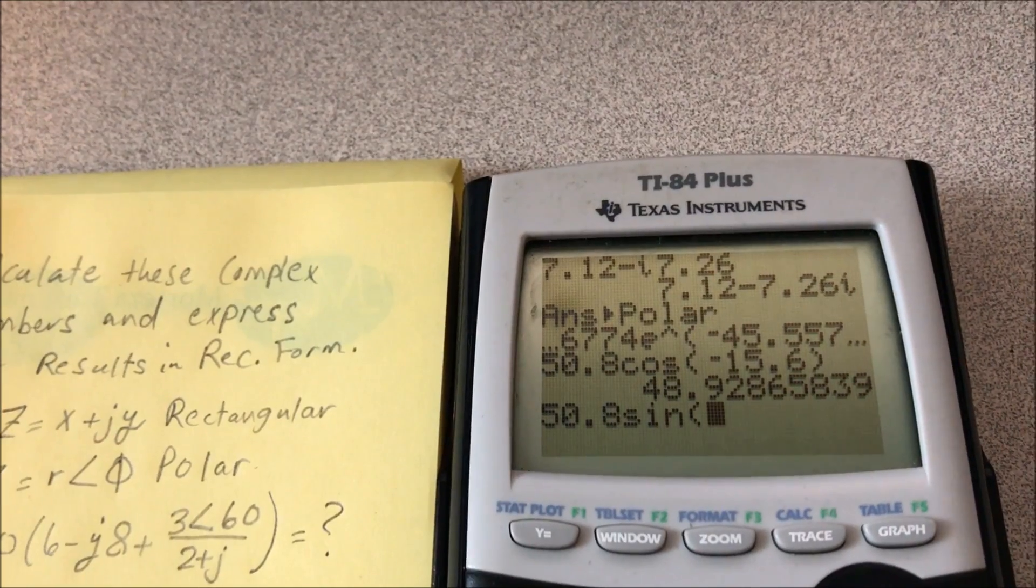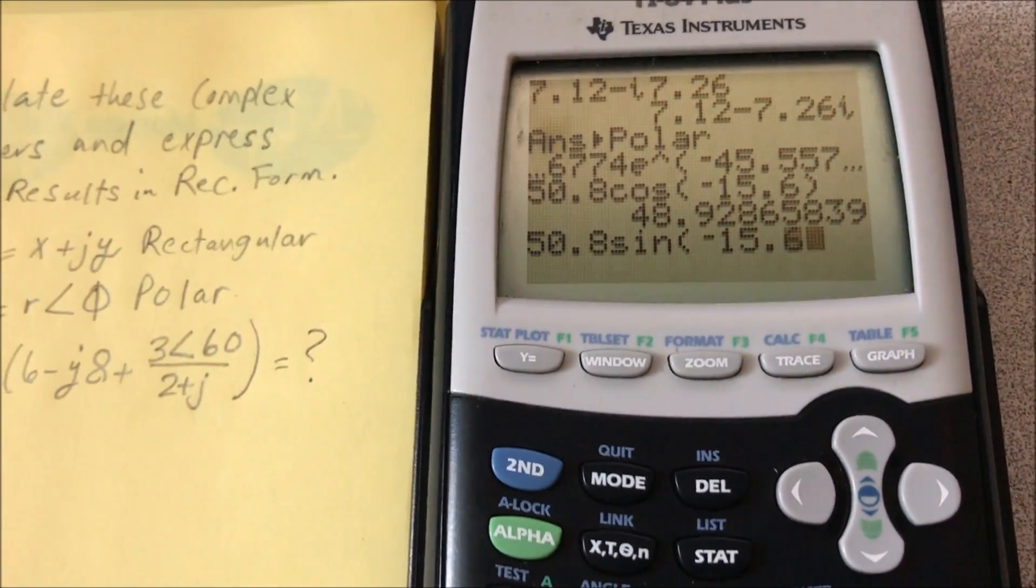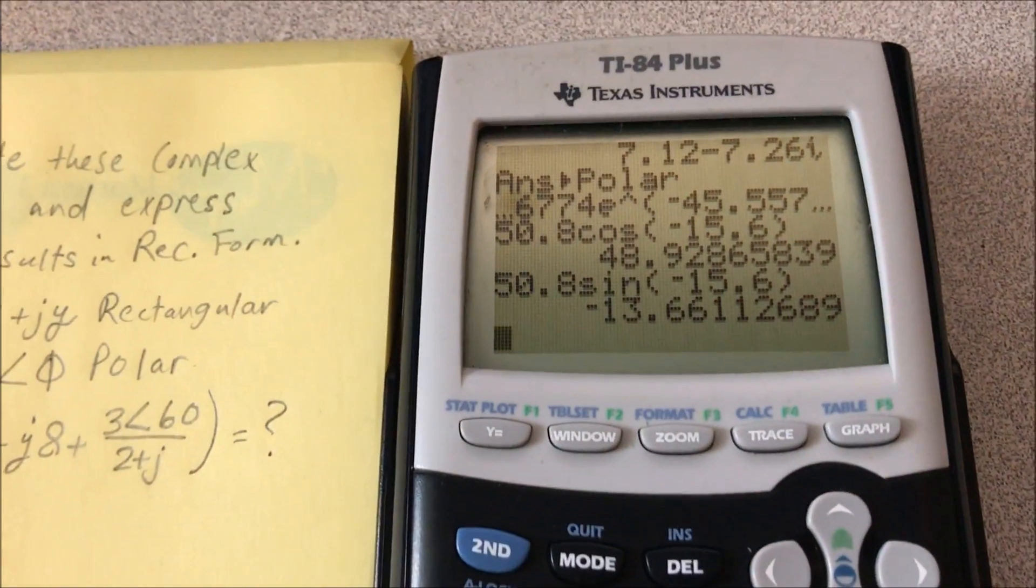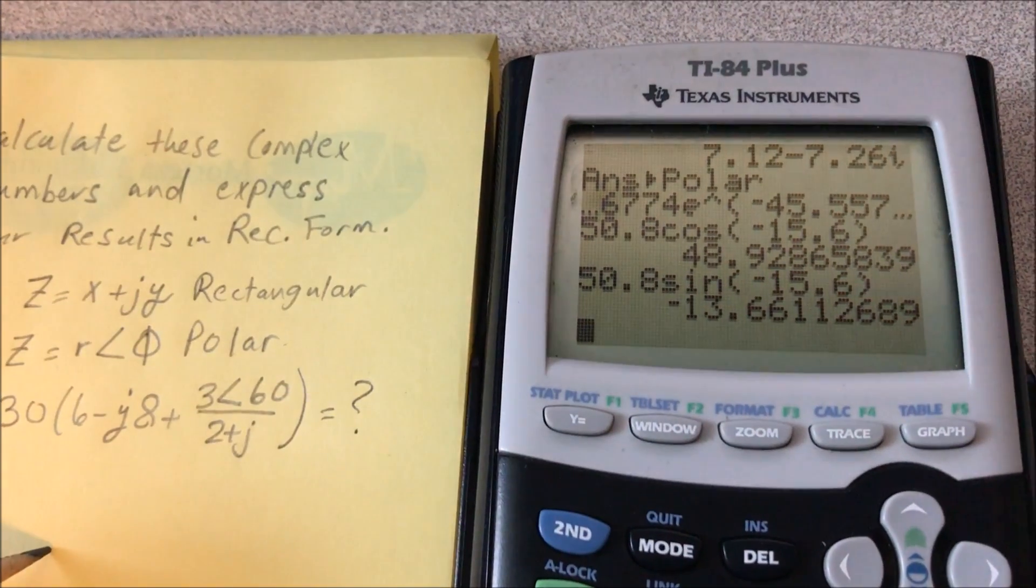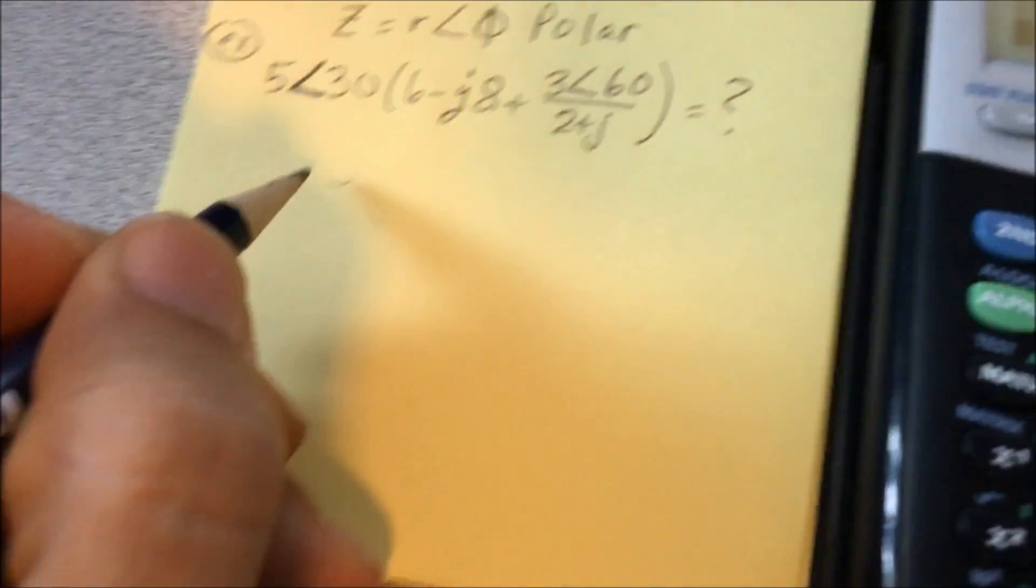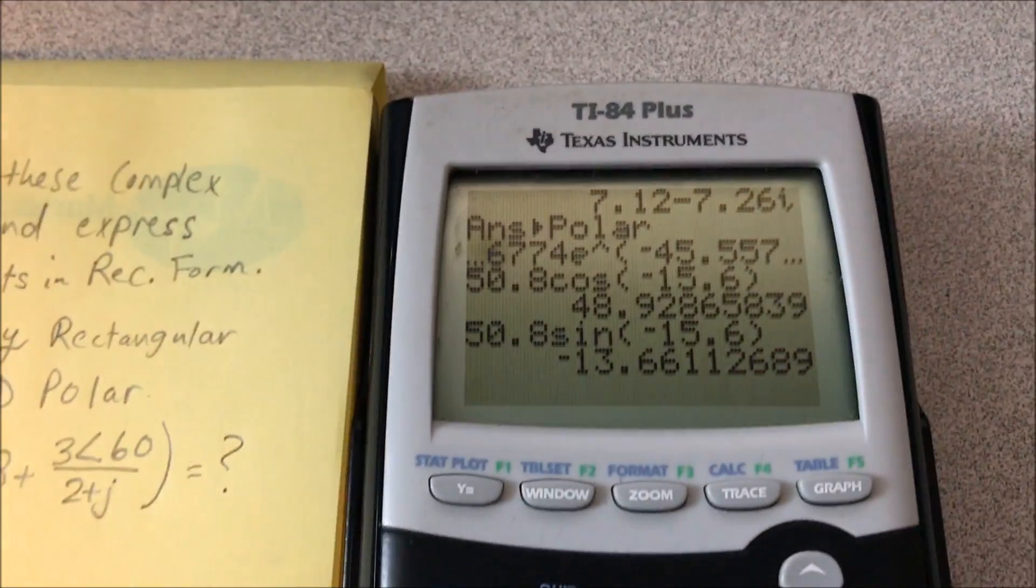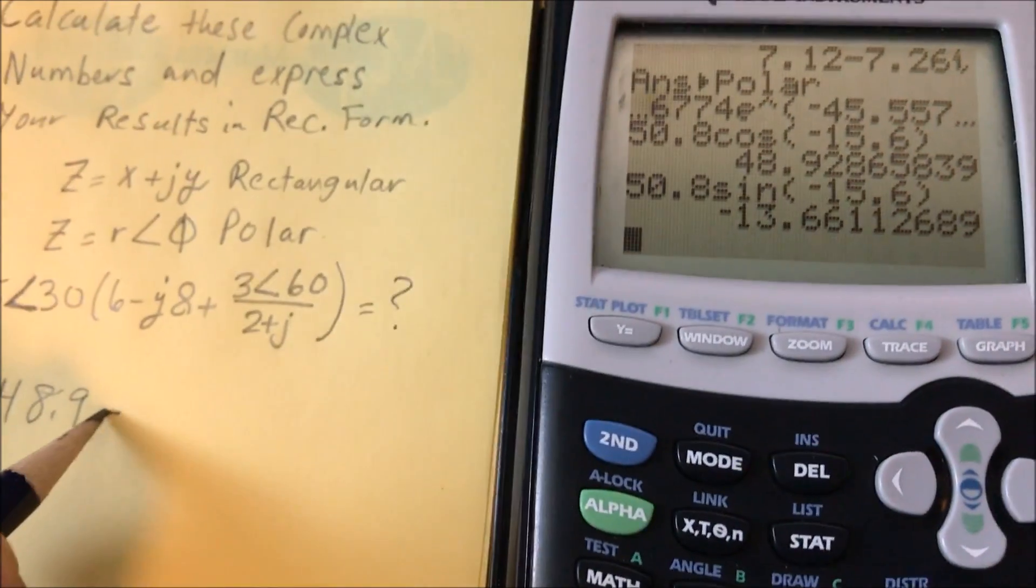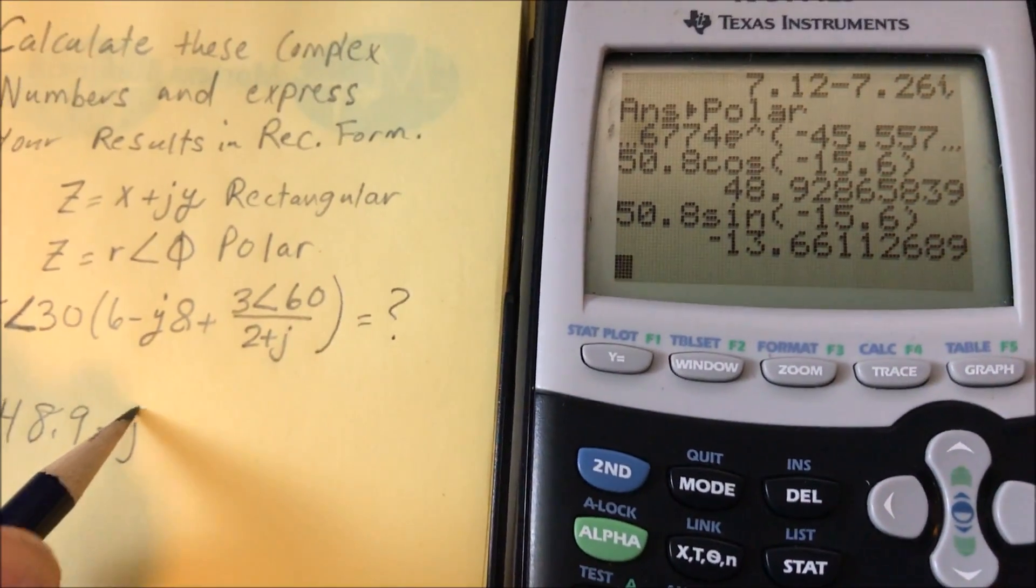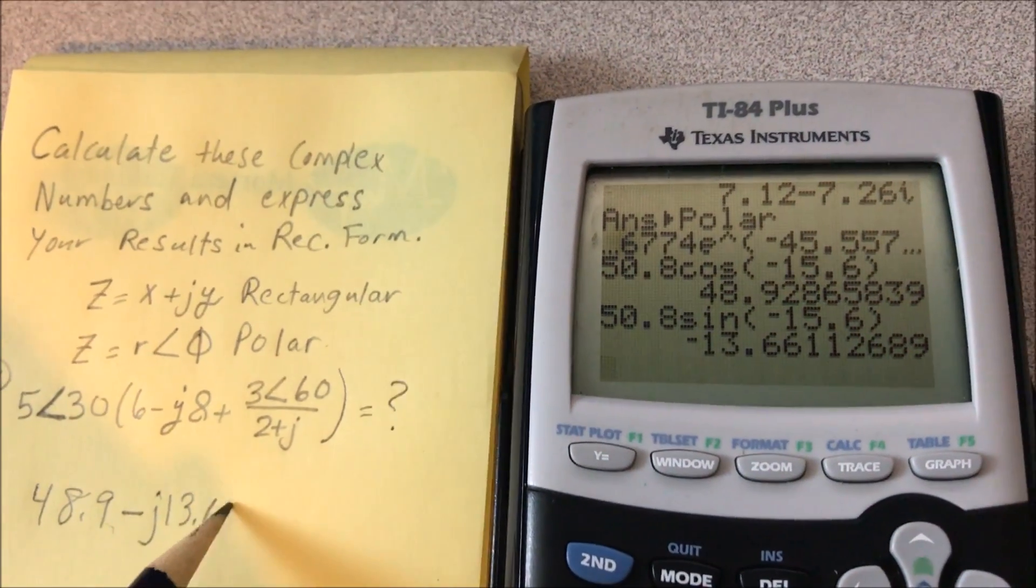50.8 sine negative 15.6, and that is your y. To write that, it would just be 48.9, and since the second number's the y coordinate, and the y coordinate's negative, it would just be minus j13.66.